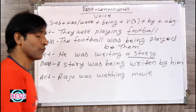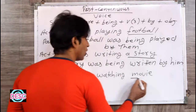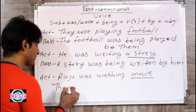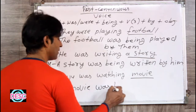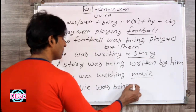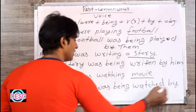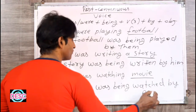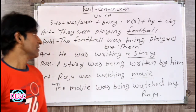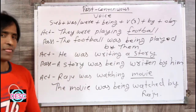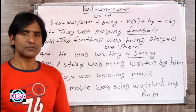Raju was watching a movie — Raju movie dekh raha tha. 'The movie' is the object. The passive becomes: The movie was being watched by Raju. Ok friends, this is how we form active to passive sentences. Active se passive hum kaise banate hain, yeh maine aapko abhi bataya — likhkar. Ab hum passive to active sikhenge.